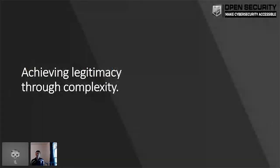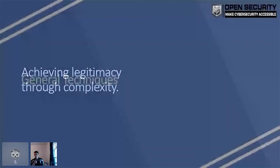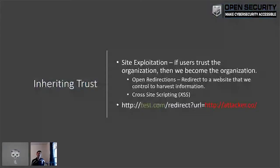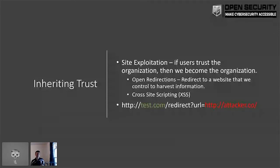What can we do with this complex internet to achieve legitimacy? There are a few techniques. We can try to use vulnerabilities to inherit trust. For example, if a trusted site has an open redirection, we can send you a link like test.com/redirect?url=our-site. Because you clicked a link to test.com and are now redirected to attacker.co, you inherently trust our website. Other examples include cross-site scripting — we can steal credentials, redirect to our site, inject a login form, or set up any rules we want under your domain name. That's powerful.